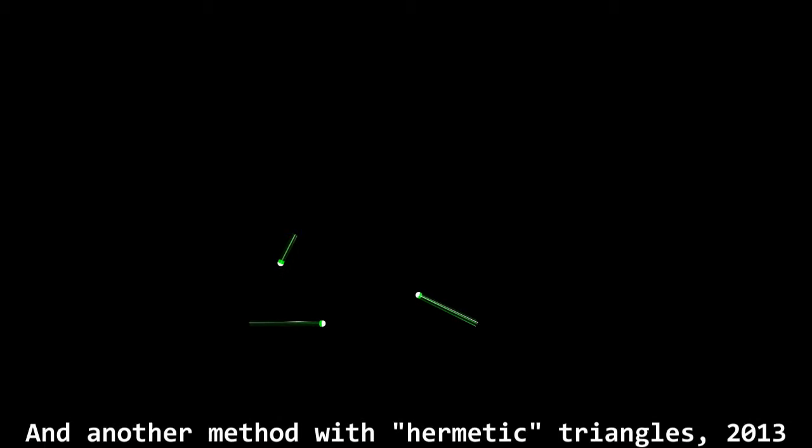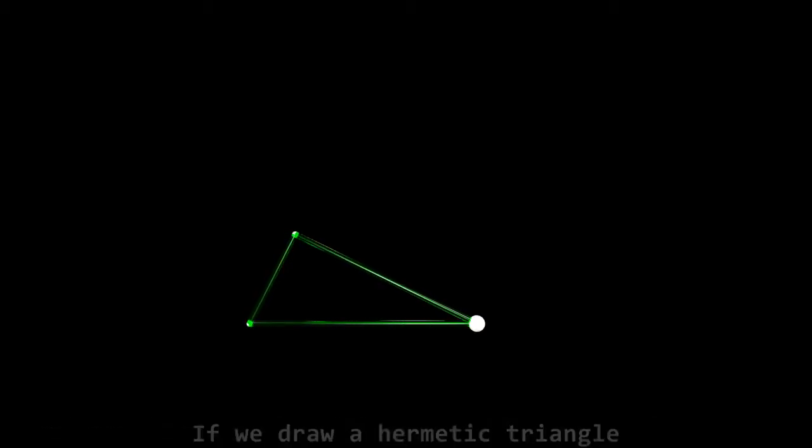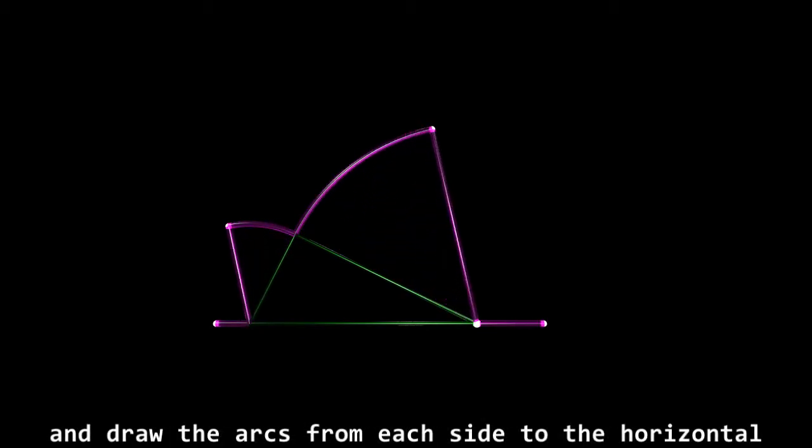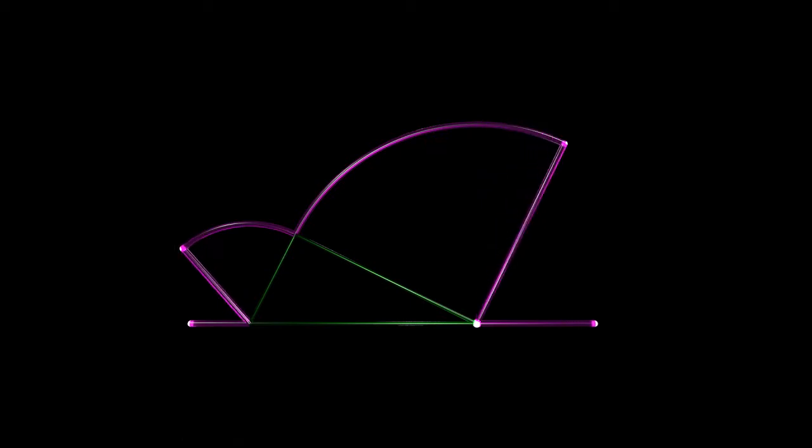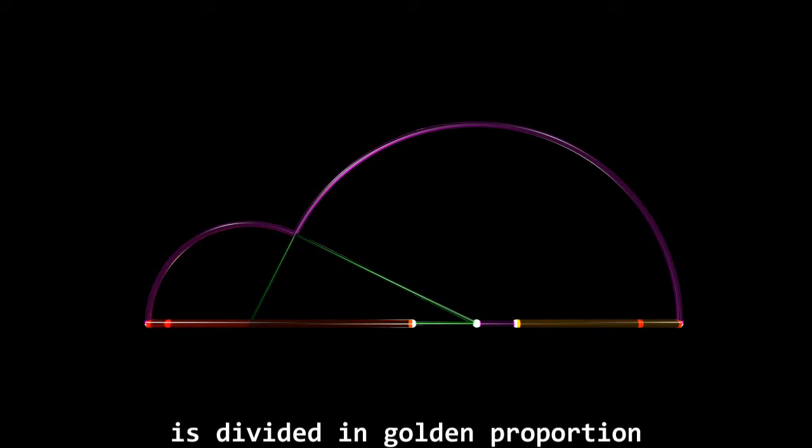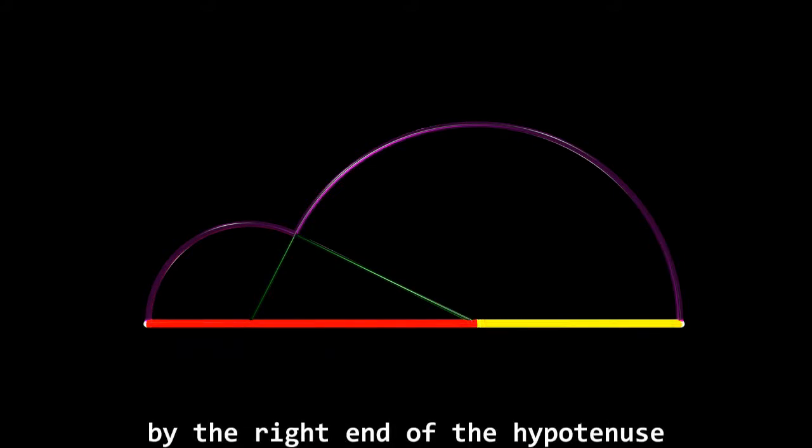And another method with hermetic triangles from 2013. If we draw a hermetic triangle with a hypotenuse in horizontal, and draw the arcs from each side to the horizontal, the total horizontal segment is divided in golden proportion by the right end of the hypotenuse.